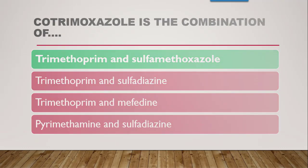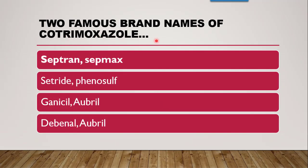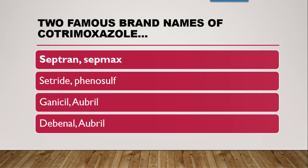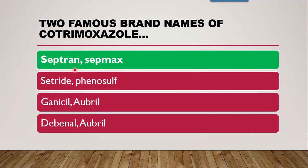Next question: the two famous brand names of cotrimoxazole. This is a favorite question of examiners. The options include SEPTRAN, CEPMAX, CETRIDE PHENOSULF, GENICIL OBRIL, and DIBINAL OBRIL. The correct answer is SEPTRAN and CEPMAX — these are the famous brand names of cotrimoxazole.